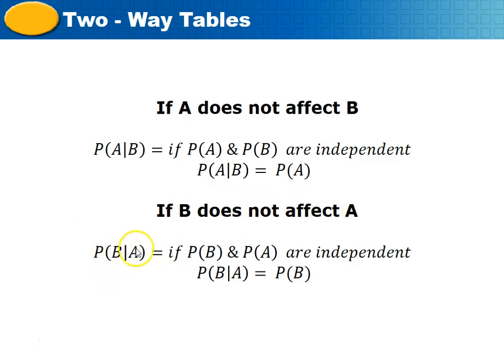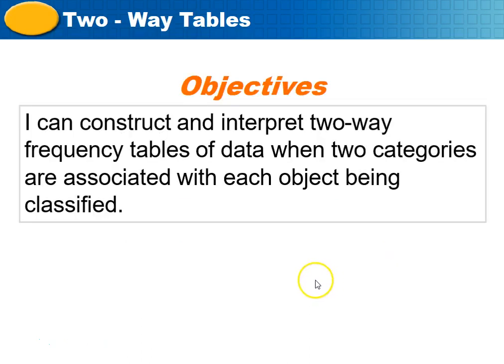If the probability of B and the probability of A are independent, then the probability of B given that A occurs is just the probability of B. This is because the probability of A and B divided by the probability of B gives us A in the first case, and the probability of B given A divided by the probability of A gives us just the probability of B. So I can construct and interpret two-way frequency tables of data when two categories are associated.